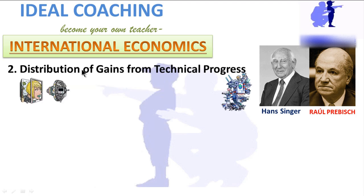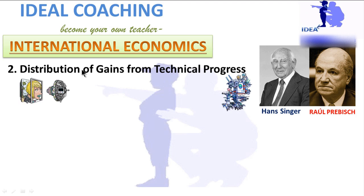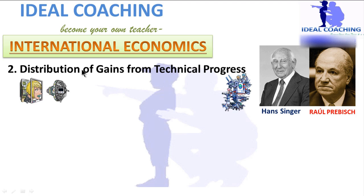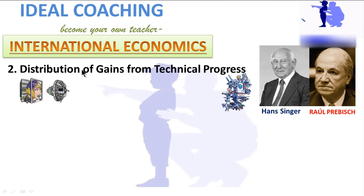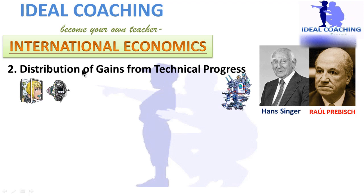The second reason is the distribution of gains from technical progress. In H.W. Singer's view, secular deterioration in LDC terms of trade occurs because gains from technical progress in developing countries are passed on to consumers in advanced countries through exports of primary products at lower prices. When LDCs sell technically-improved products cheaply to advanced countries, it is the advanced countries that gain. If individual producers benefit from selling abroad, it raises personal income but not the country's overall terms of trade income.